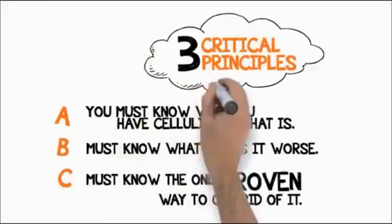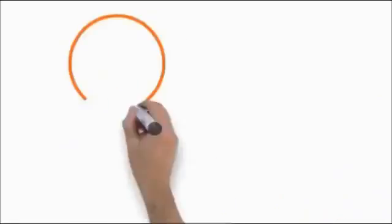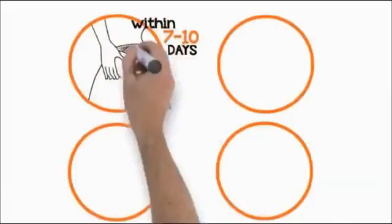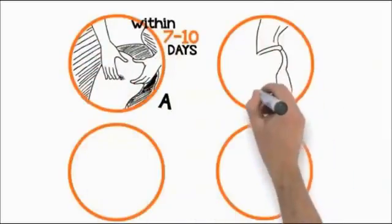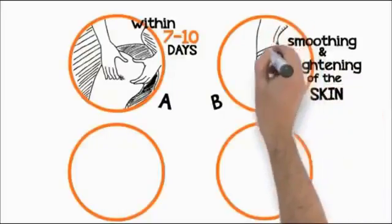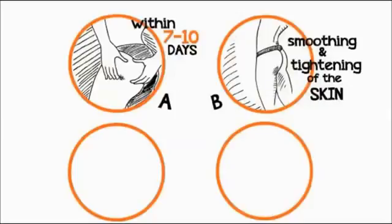These three crucial principles are simple and I'm going to show you each of them in just a moment. Here's what you can expect once you put this into use: your skin is getting tighter within seven to ten days and the dimples and bumps are starting to fade. After that, you'll see continued smoothing and tightening of your skin on your butt, hips, thighs, and legs with each passing week. These are typical results.